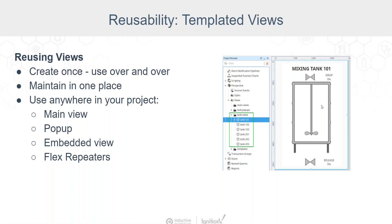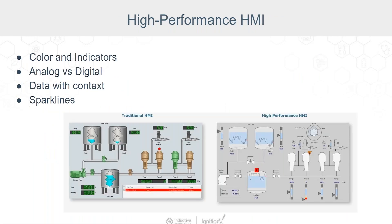We can also reuse our views. One of the most common pitfalls we see is creating copies of a view for multiple objects. In a tank example, you could make life much easier by creating one view with a tank number parameter instead of a separate view for each tank. So we've talked about making the designer's life easier — let's switch focus and talk about our users. We want them to find information quickly.